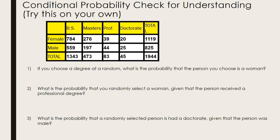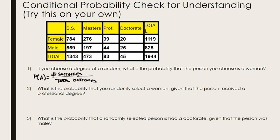We've got three questions — pause the video and do your best to answer these. The first one is actually a throwback to basic probability. If you choose a degree at random, what's the probability that the person is a woman? We look at number of successes over total outcomes. Note that everyone in our table has a degree, so this is not really conditional probability. The number of successes is 1119 women out of 1944 total people — roughly a 58% chance.